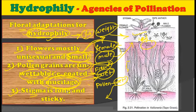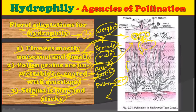The third adaptation is that the stigma is very long and sticky. As you can see here, this is a female flower and its stigma is very long — because it has to reach out of the surface in order to capture pollen. And at the same time, it is sticky, so that once the pollen grains land on the stigma, the stigma can hold these pollen grains till they germinate. So we have seen three floral adaptations for hydrophilous plants: first, flowers are mostly unisexual and small; second, the pollen grains are unwettable, coated with mucilage; and third, the stigma is long and sticky.